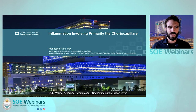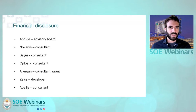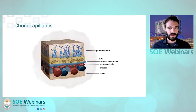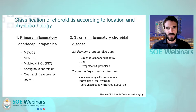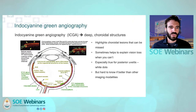Good morning, everyone. I'm going to talk today about the inflammation involving primarily the chorocapillaris. These are my financial disclosures, but they're not relevant to the presentation. When we talk about chorocapillaritis, we talk about an inflammation of this particular layer — the chorocapillaris — which is between Bruch's membrane and the choroid. This term comes from an original classification that divides inflammation between those involving the chorocapillaris and those involving the choroidal stroma per se. This division was done by Herbert through the use of ICG, a molecule that allows very good visualization of the chorocapillaris and choroid.